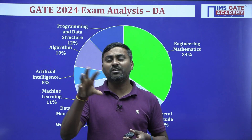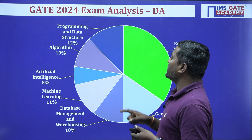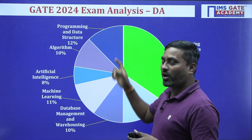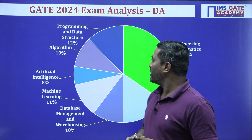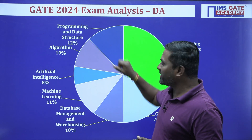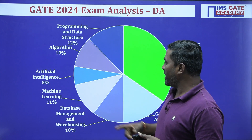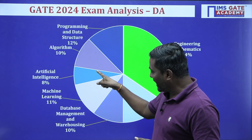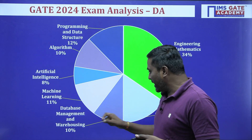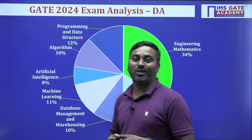Based on various sources, we gathered the marks distribution: Programming and Data Structures got 12 marks, Algorithms 10 marks — together 22 marks from this paper. Artificial Intelligence was 8 marks, Machine Learning 11 marks, DBMS 10 marks, and Mathematics was the highest at 34 marks.